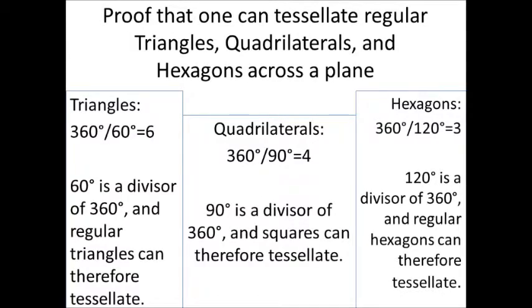360 degrees divided by the 60 degrees that makes up each interior angle of a regular triangle gives us 6, showing us that 60 is a divisor of 360 and proving that triangles can tessellate.